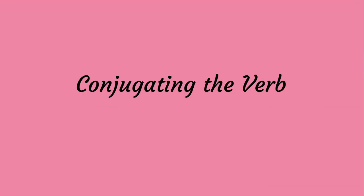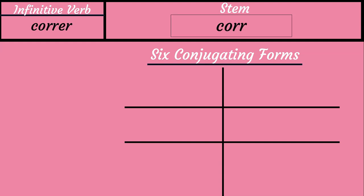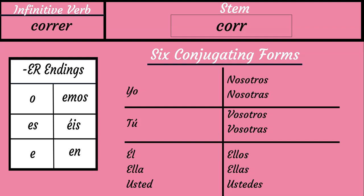Now we're ready to conjugate ER verbs. Before we put the six conjugating forms together, we need three things: the infinitive verb, the stem of that verb, and the endings that correspond to each of the subject pronouns. Creating the six forms is very simple. All you have to do is use the stem of the verb with each form and add the corresponding endings.